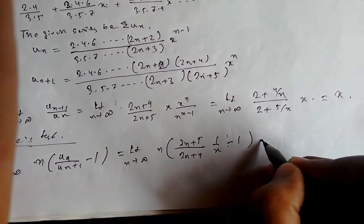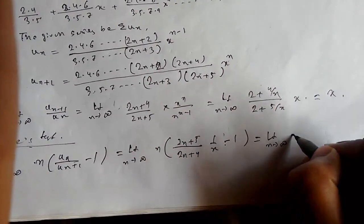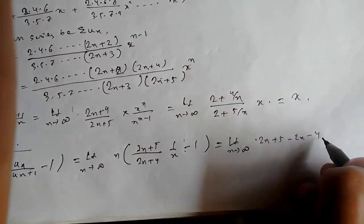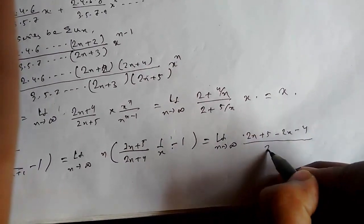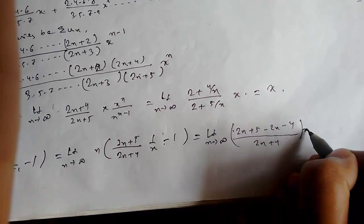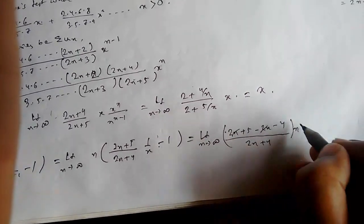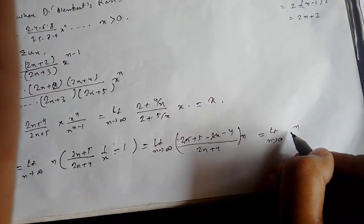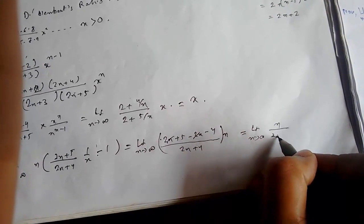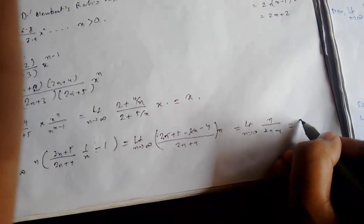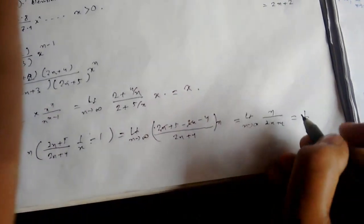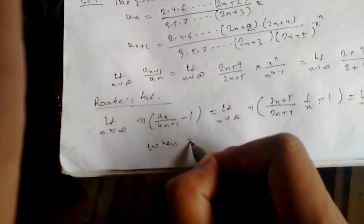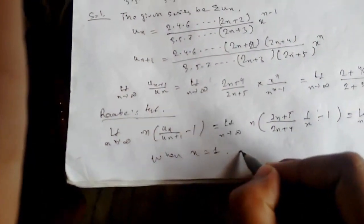So solving this: limit n tending to infinity, taking LCM: ((2n+5) - (2n+4))/(2n+4) times n. Now dividing numerator and denominator by n, we get 1/2, which is less than 1. So we can say when x equals 1, the series diverges.